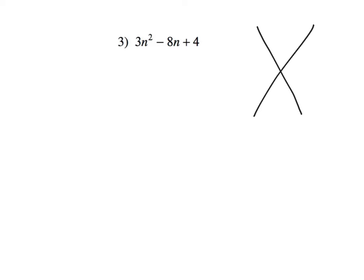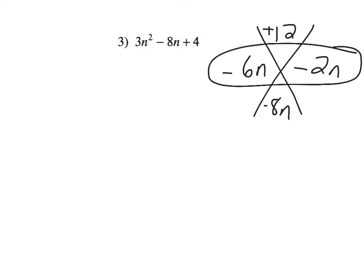Example three. Three times four is twelve, positive twelve. And I need negative eight. If I'm multiplying to a positive, I could have two positives or two negatives. But since I need to add to a negative, I need two negatives. So, what multiplies to twelve and adds to eight? That would be six and two. Since that's n, place an n. And that's going to take the place of the middle. So, negative six, negative two is still negative eight n — you're not changing the problem.